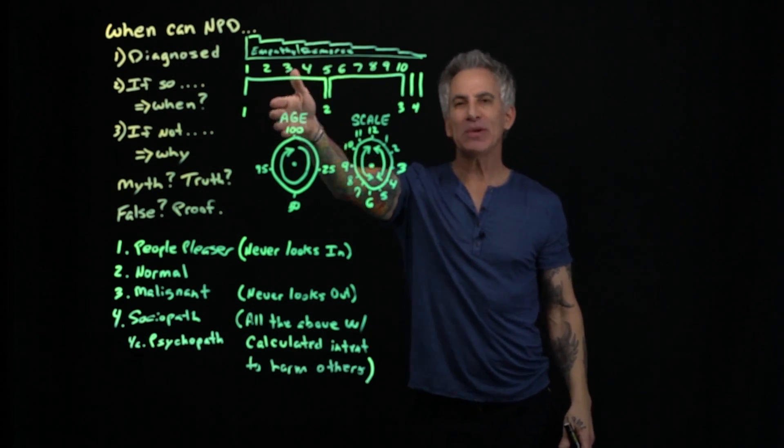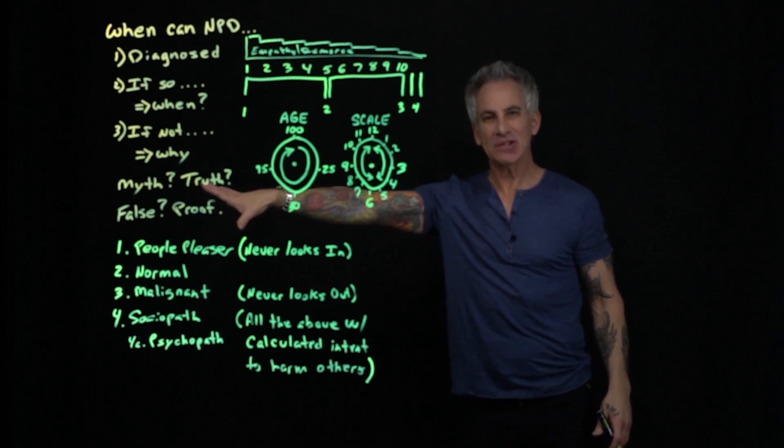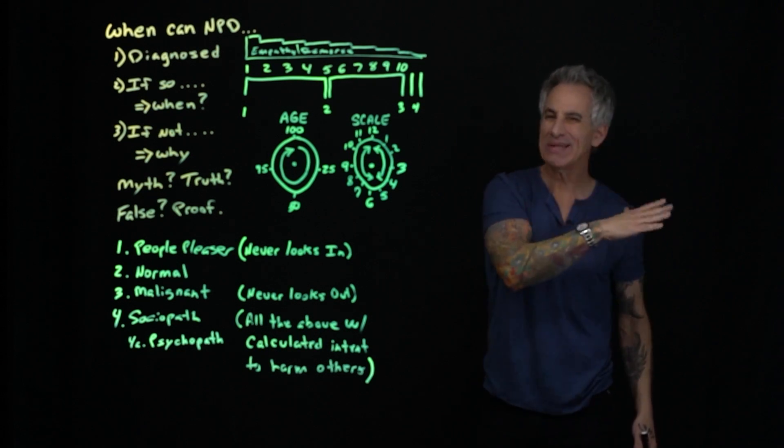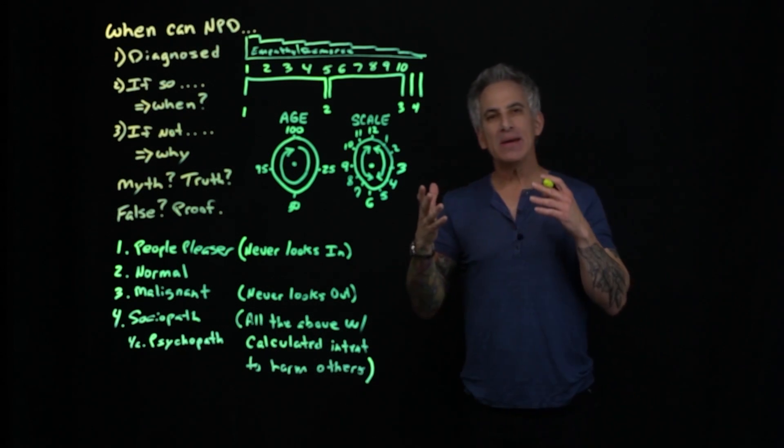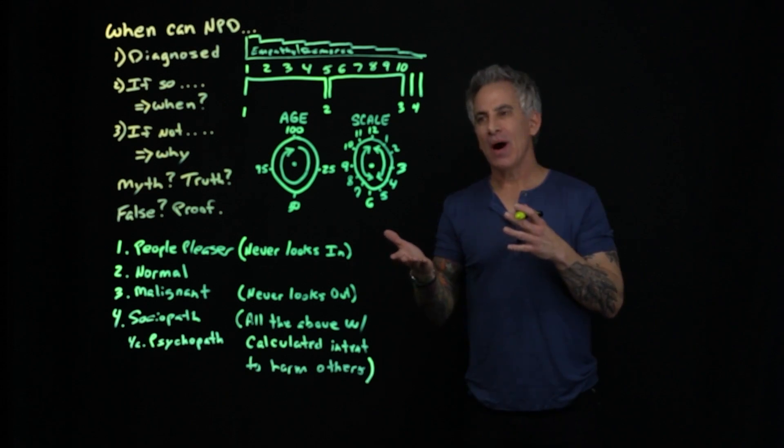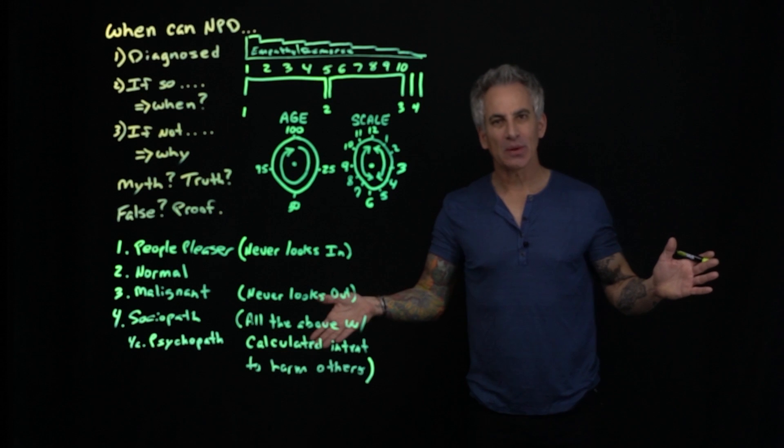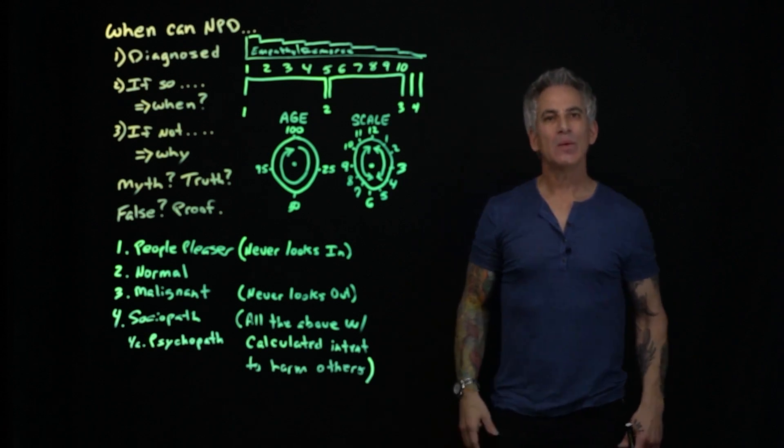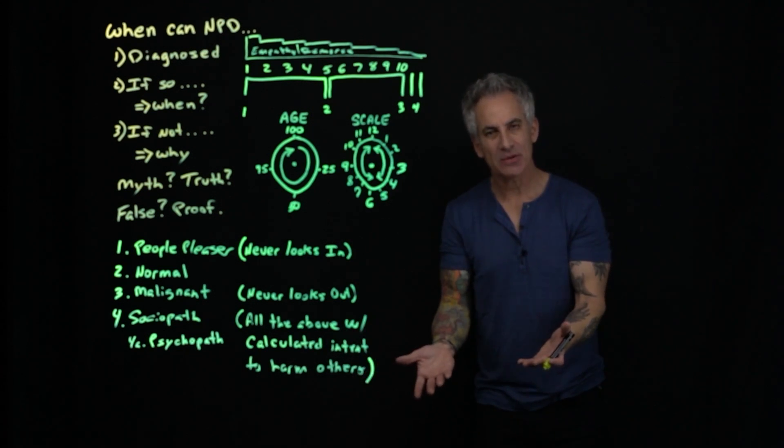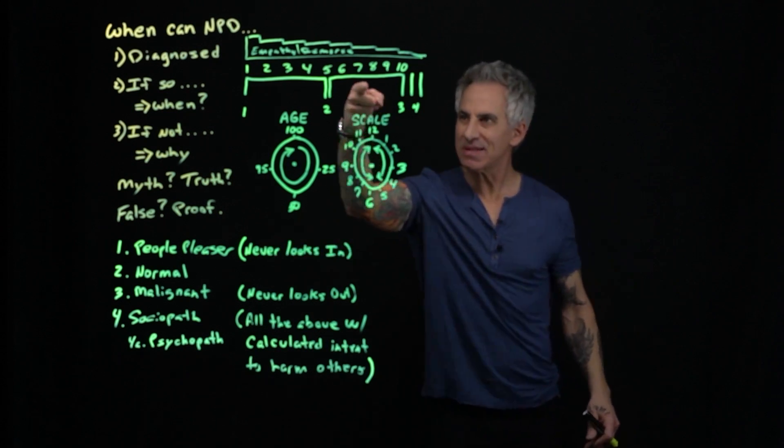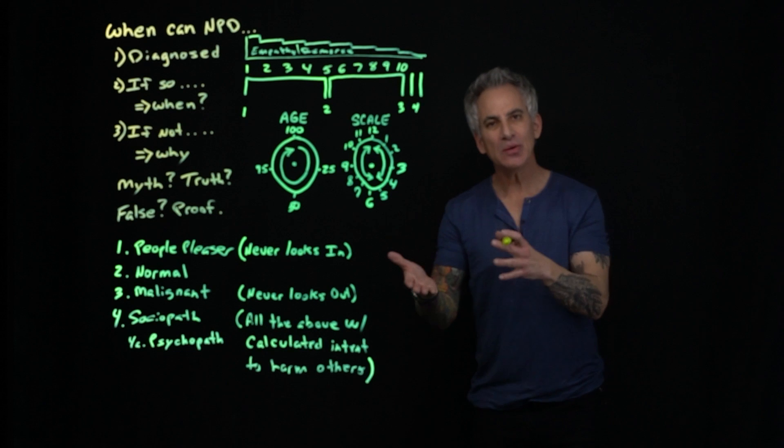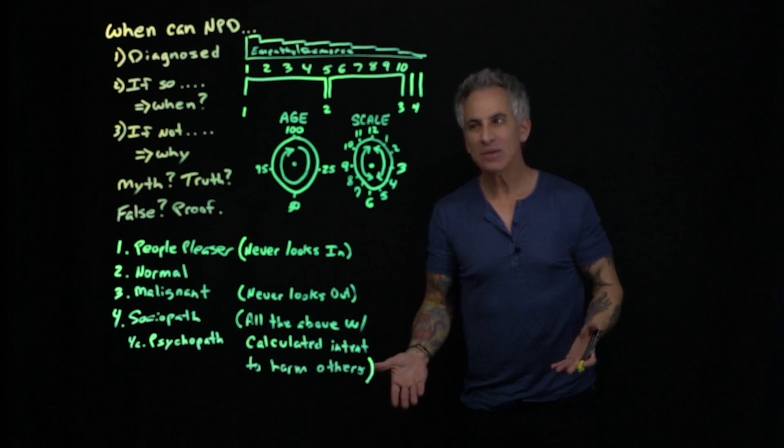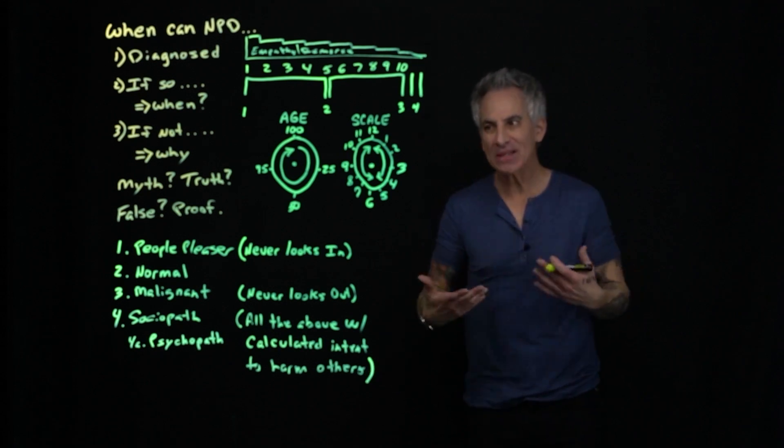We have the people pleaser on the far left—it's destructive, it's unhealthy. And then we have the malignant and the socio and psychopaths on the far right. Definitely not healthy. In my mind's eye, I believe I truly do that we never want to be here and stuck. We want to evolve. We want to change, not to normal, not stuck in the middle. We want to be able to use malignant narcissism when we need to, to protect us. That's what it's there for.